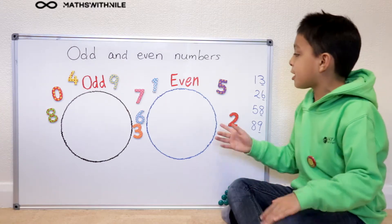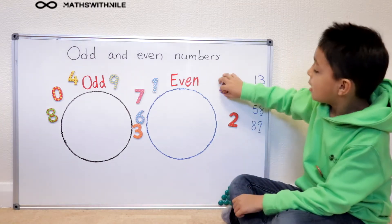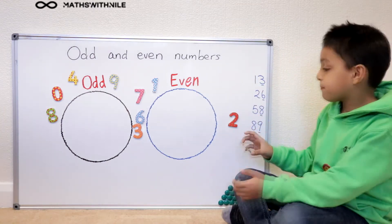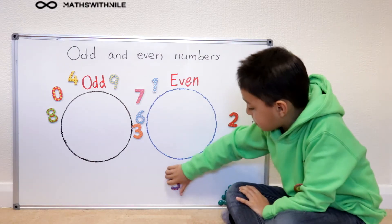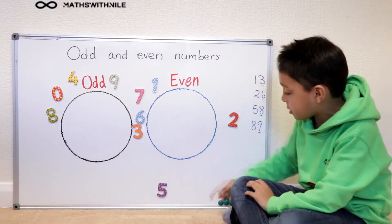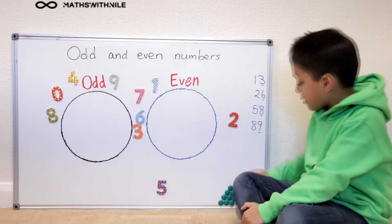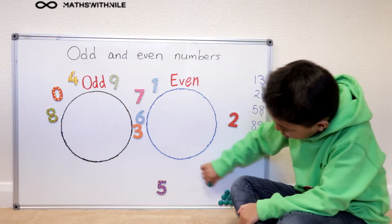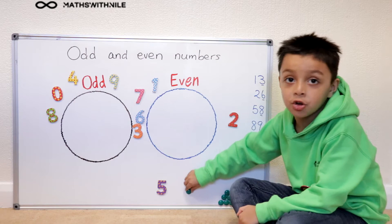So I'm going to just pick a number randomly and I choose five. So I'm going to put my five right here and then I'm going to put it in twos.